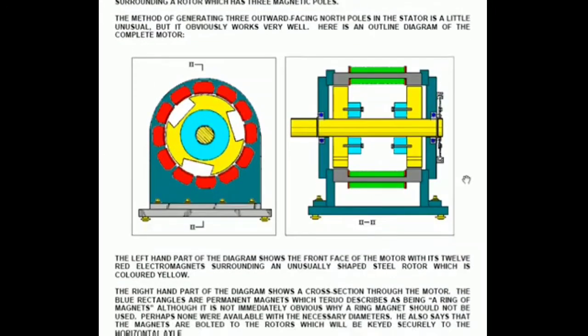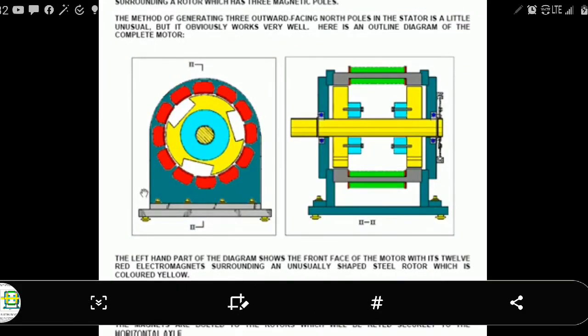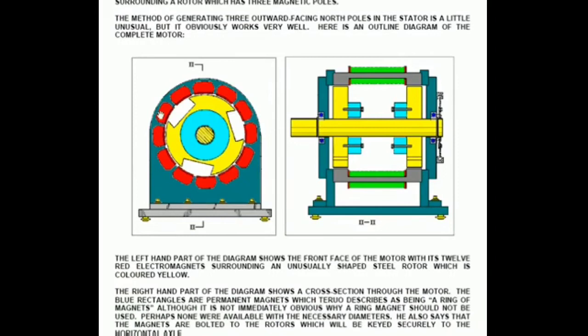Here is an outline diagram of the complete motor. The left-hand part of the diagram shows the front face of the motor with its 12 red electromagnets of the stator surrounding an unusually shaped steel rotor which is shown coloured in yellow. The right-hand part of the diagram is a cross-section through the motor as shown by the line here for the cross-section marked 2. So this is the cross-section here. You have a horizontal axle and the two yellow rotor pieces are keyed, presumably, into the horizontal shaft itself.